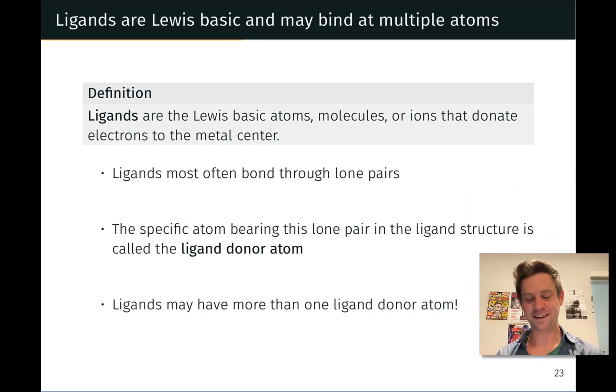Speaking of ligands, we're going to take a deeper dive now into the Lewis basic components of coordination complexes, the ligands. Ligands are these Lewis basic atoms, molecules, or ions that donate electron pairs in dative bonds to the metal center. And the electrons donated are most commonly lone pairs.